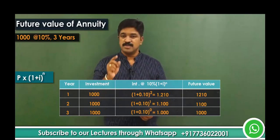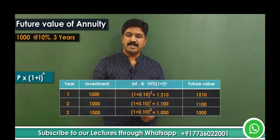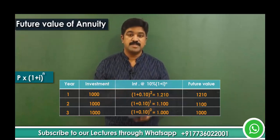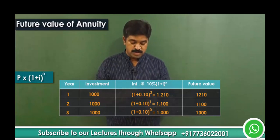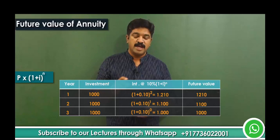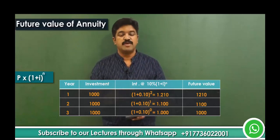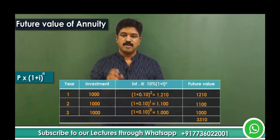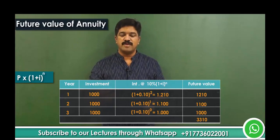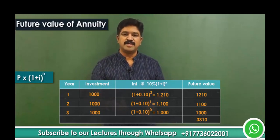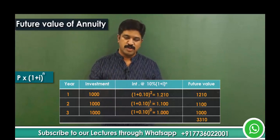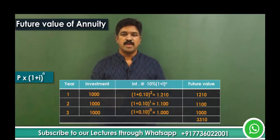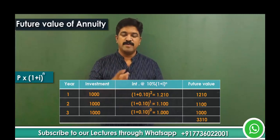Now, adding them all up: 1210 from the first year investment, plus 1100 from the second year, plus 1000 from the third year, gives a total of 3310. So if you invest 1000 rupees every year for 3 years at the end of each year, the total 3000 invested will have a future value of 3310.